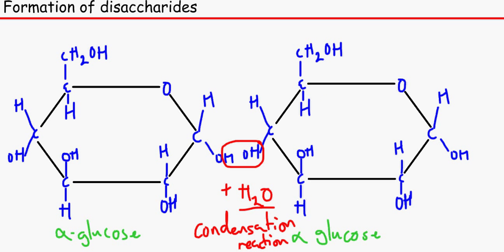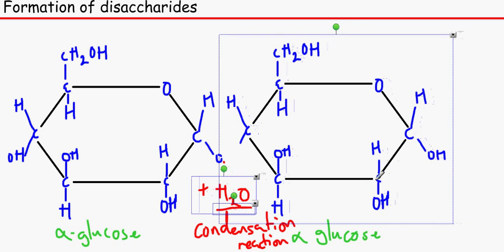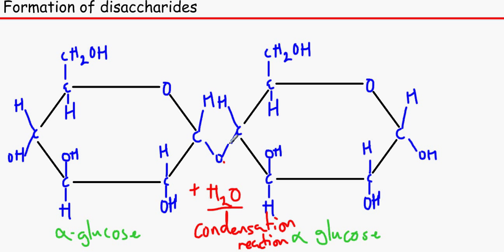The opposite of it is hydrolysis, but we'll come to that in a minute. The OH from the fourth carbon over here has joined to the H on the first carbon over here. So they join together with a glycosidic bond. They share an oxygen atom. So this bond over here is called a glycosidic bond. This is one way of remembering it: glycosidic, glucose.